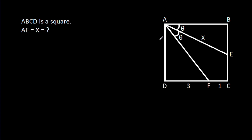In this video, we have been given that ABCD is a square, angle BAE is theta, angle EAF is theta, CF is 1, DF is 3, and AE is X. We have to find X.